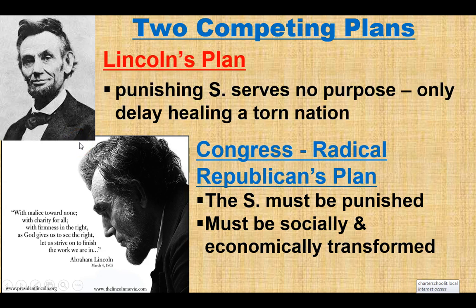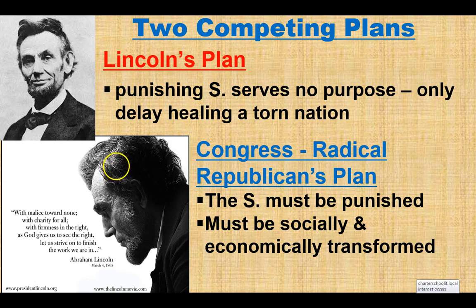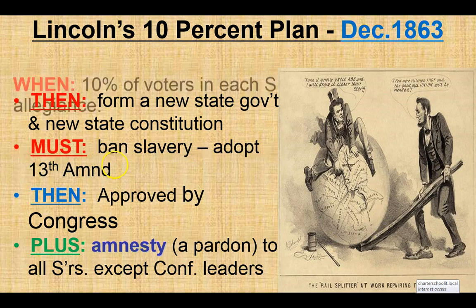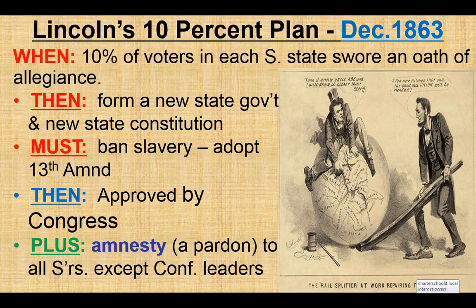Two competing plans. The first plan is Lincoln's plan. His mindset, as you look at the quote from his Second Inaugural Address — malice toward none, charity for all — is no punishment. He doesn't want any more punishment or pain; it only delays healing the torn nation. However, the Radical Republicans want punishment; they want transformation of the South to be something more like the North, no longer agrarian-based, and of course slavery is going to go away.